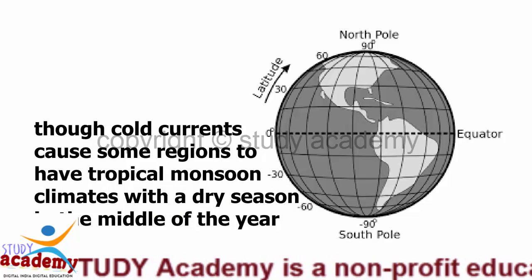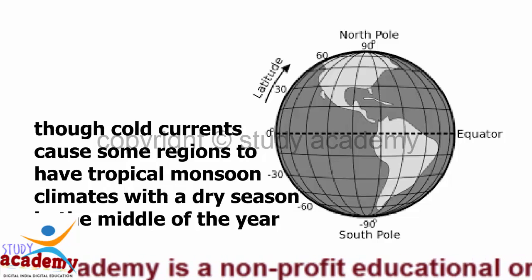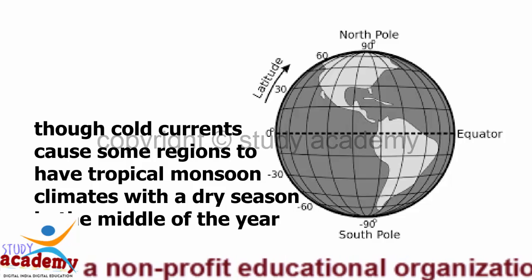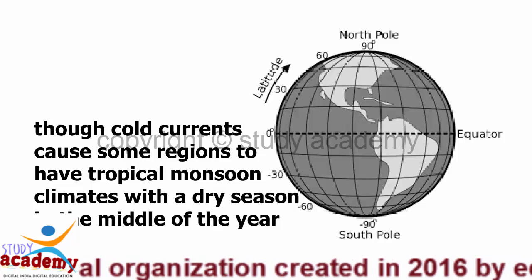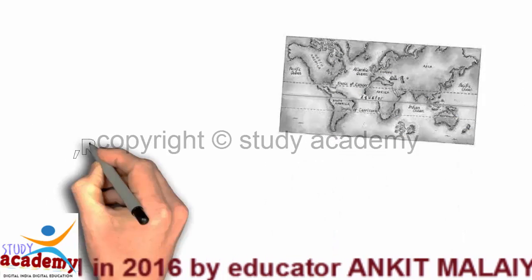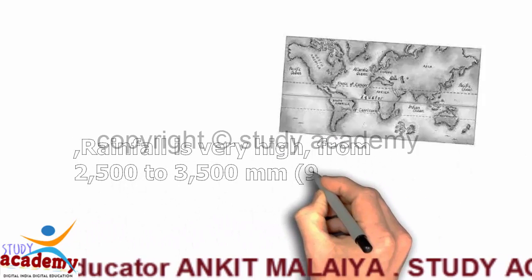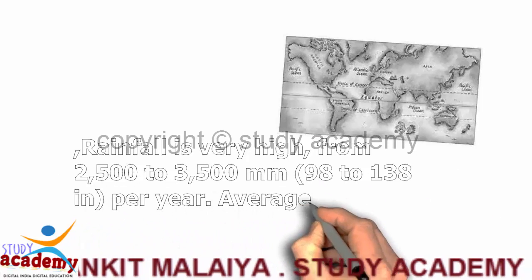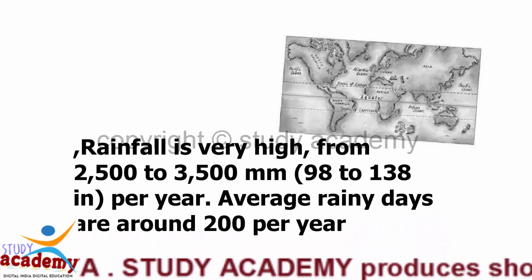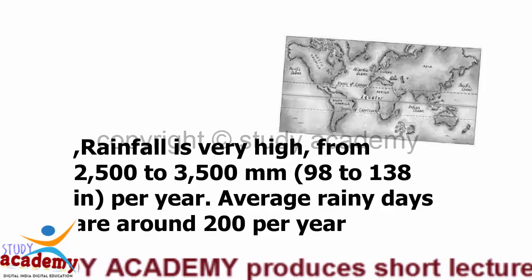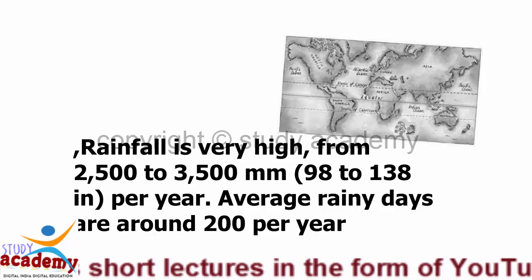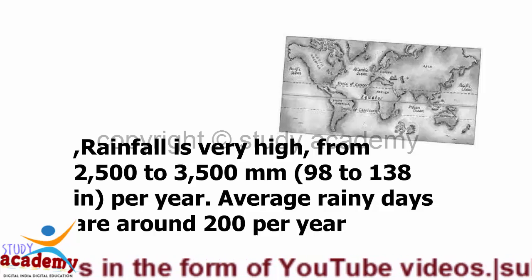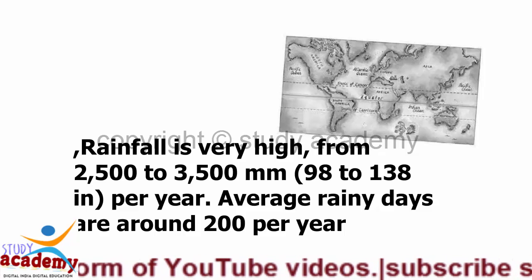Though cold currents cause some regions to have tropical monsoon climates with a dry season in the middle of the year. Rainfall is very high, from 2,500 to 3,500 millimeters (98 to 138 inches) per year, and average rainy days are around 200 per year.